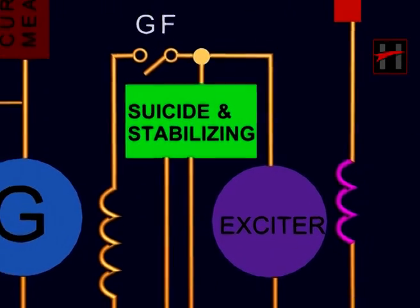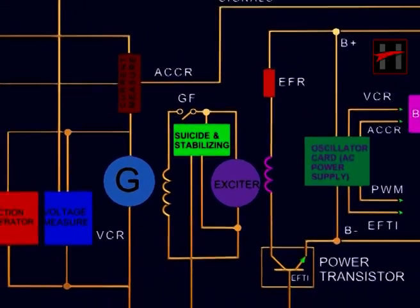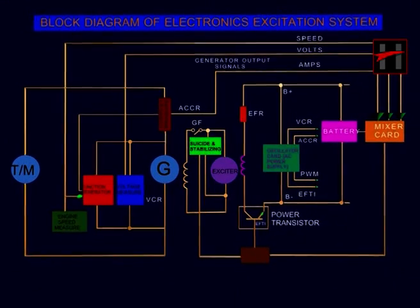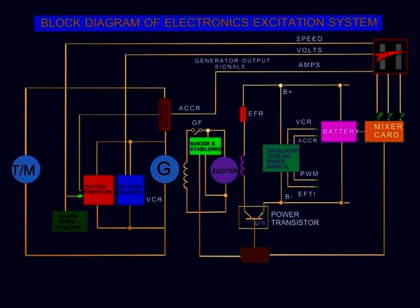The excitation system keeps the traction generator or the traction alternator horsepower demand constant over a wide variation of terminal voltage.